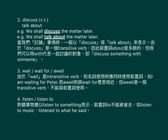Number three: 'wait for' is intransitive. When used with a noun, it should be used together with a preposition — for example, 'I am waiting for Peter.' 'Await' and 'wait for' have similar meanings, but 'await' is a transitive verb and cannot be used with a preposition.